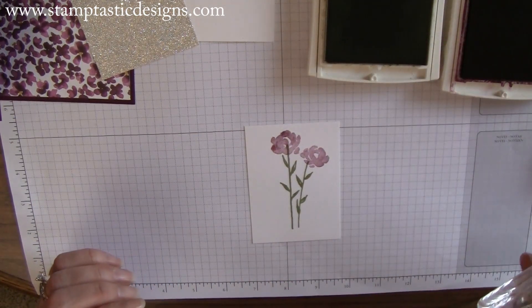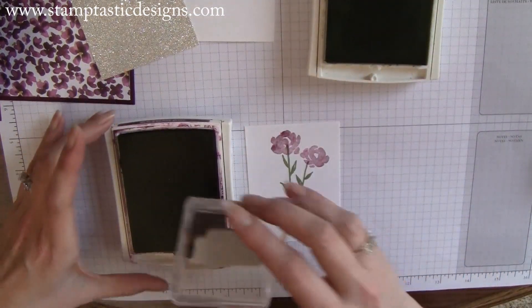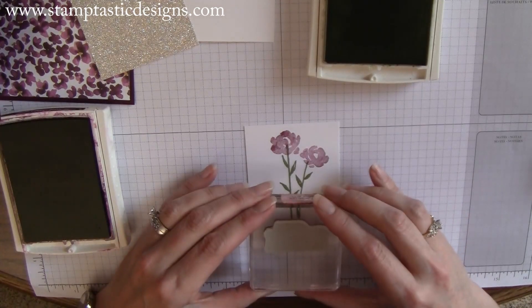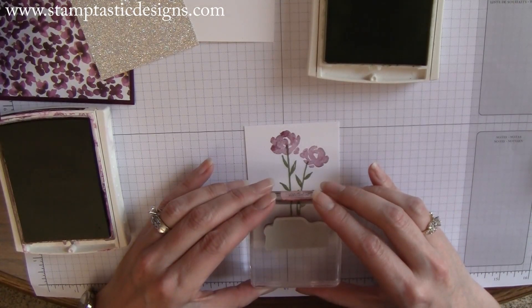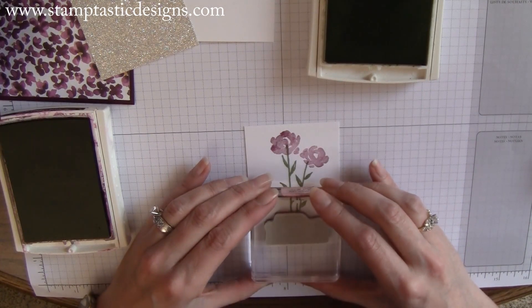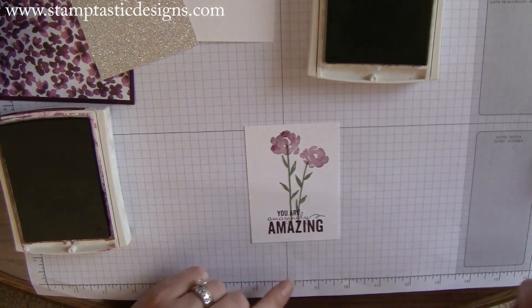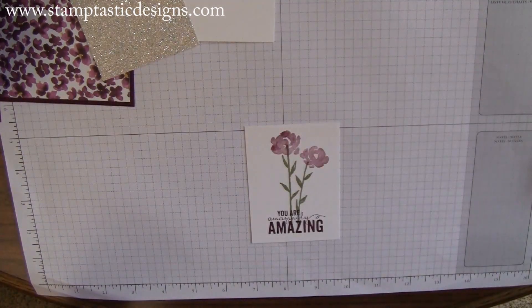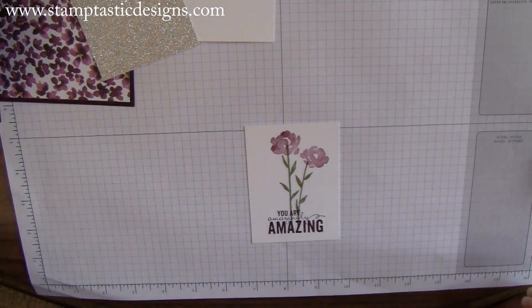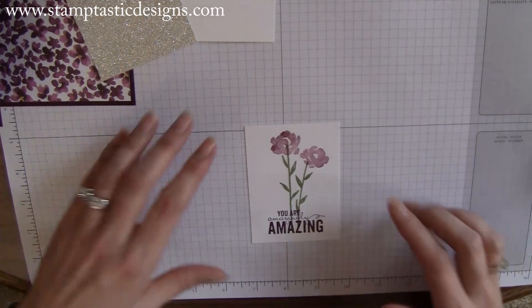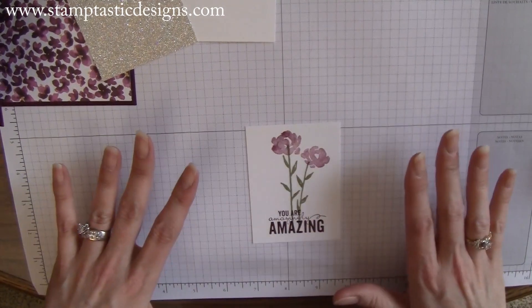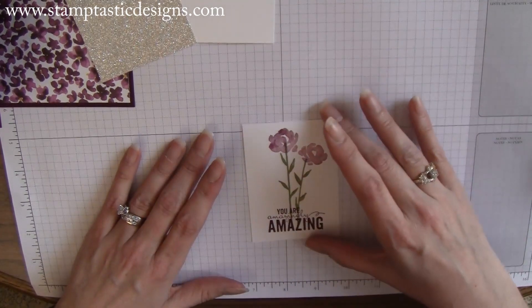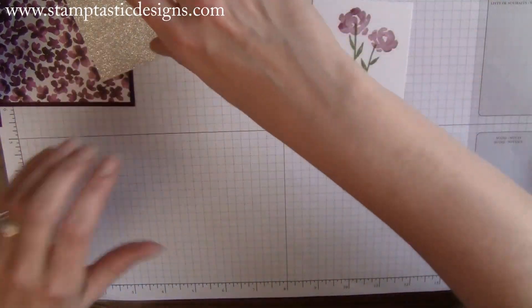For the final piece, I'm going to ink up my sentiment using Blackberry Bliss so it stands out and matches the cardstock. I'll stamp that across the bottom. That's all the stamping we have to do. The Blackberry Bliss takes a little bit of time to dry, probably because it's a darker color. We'll give that a second to dry.